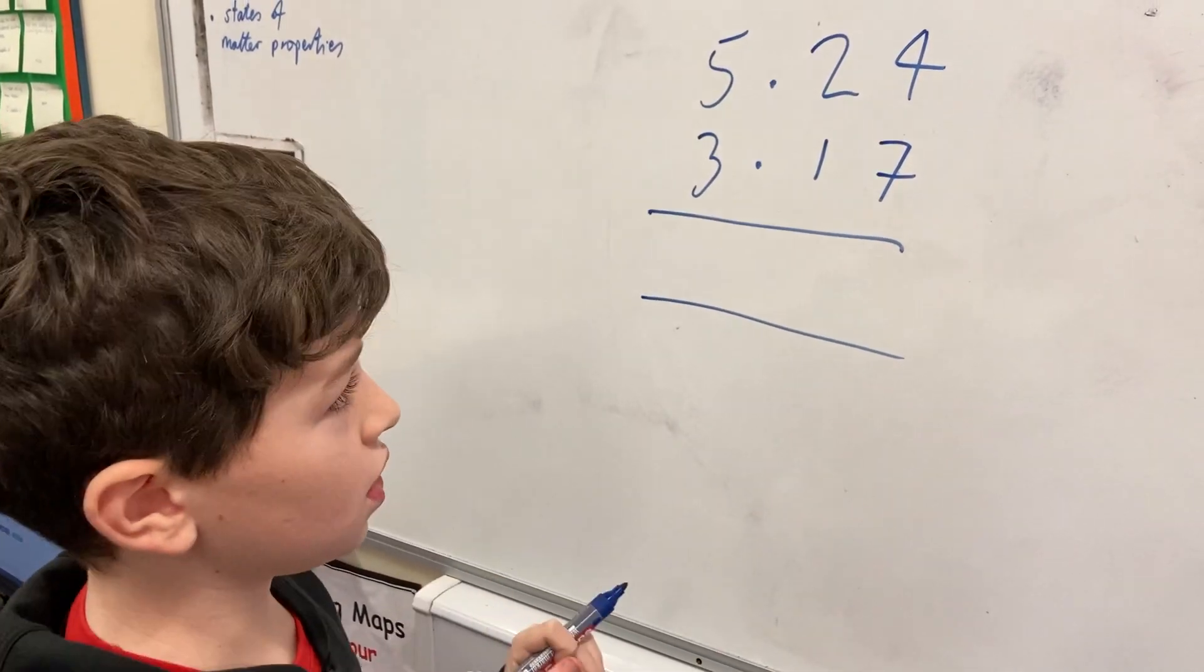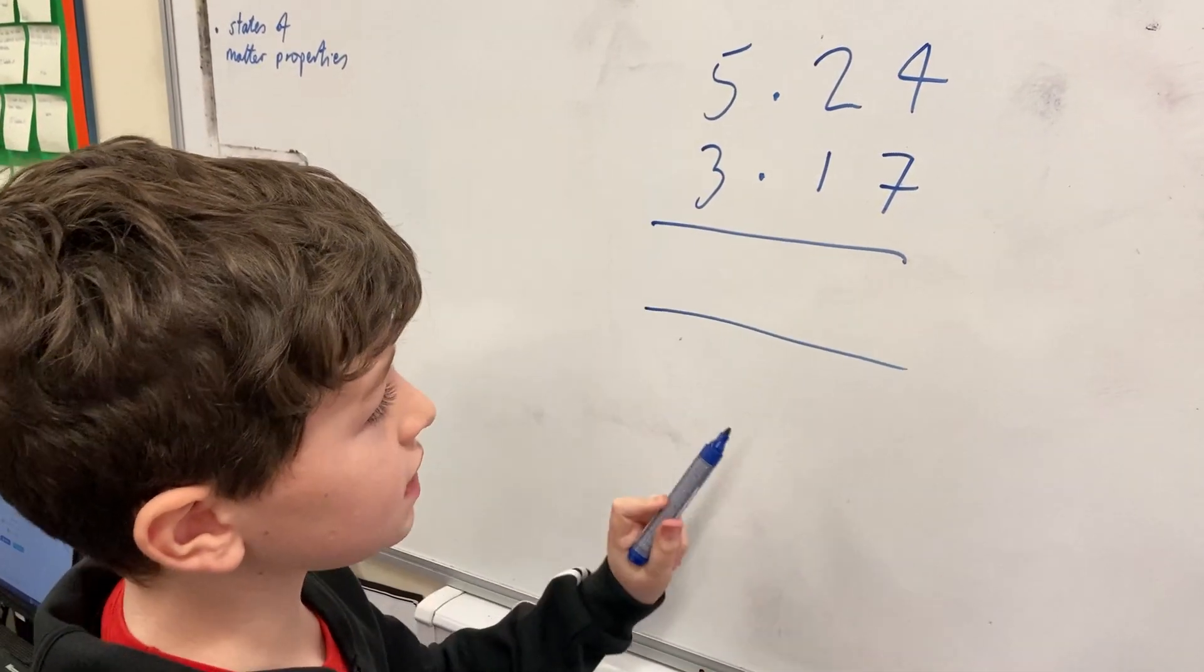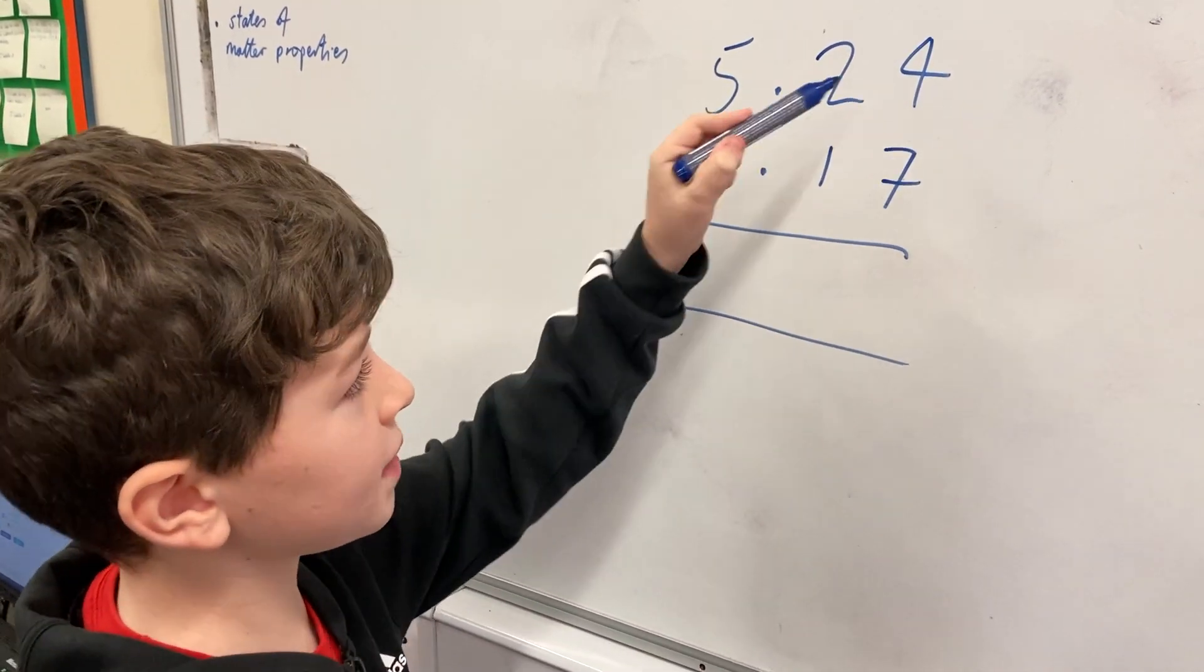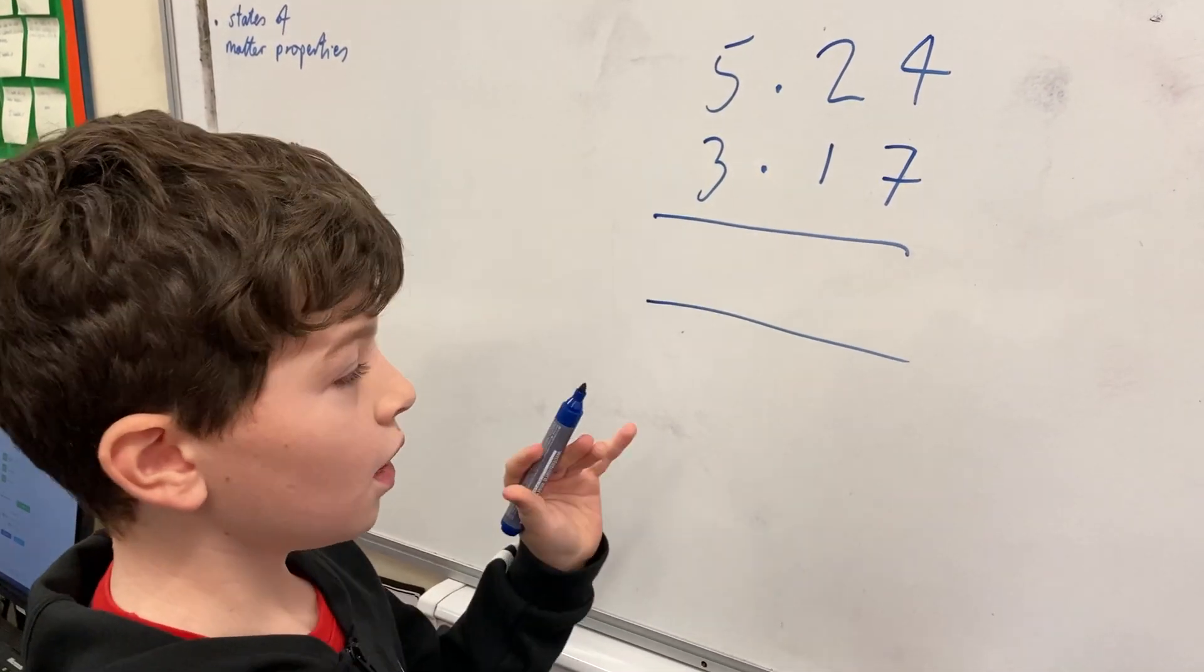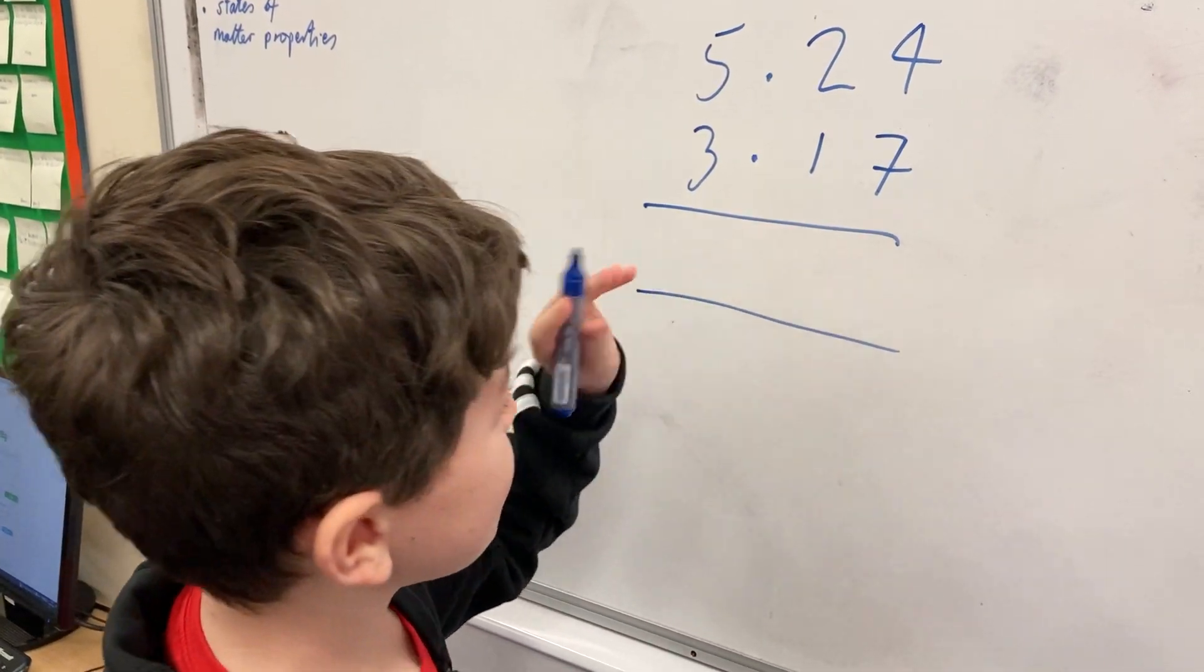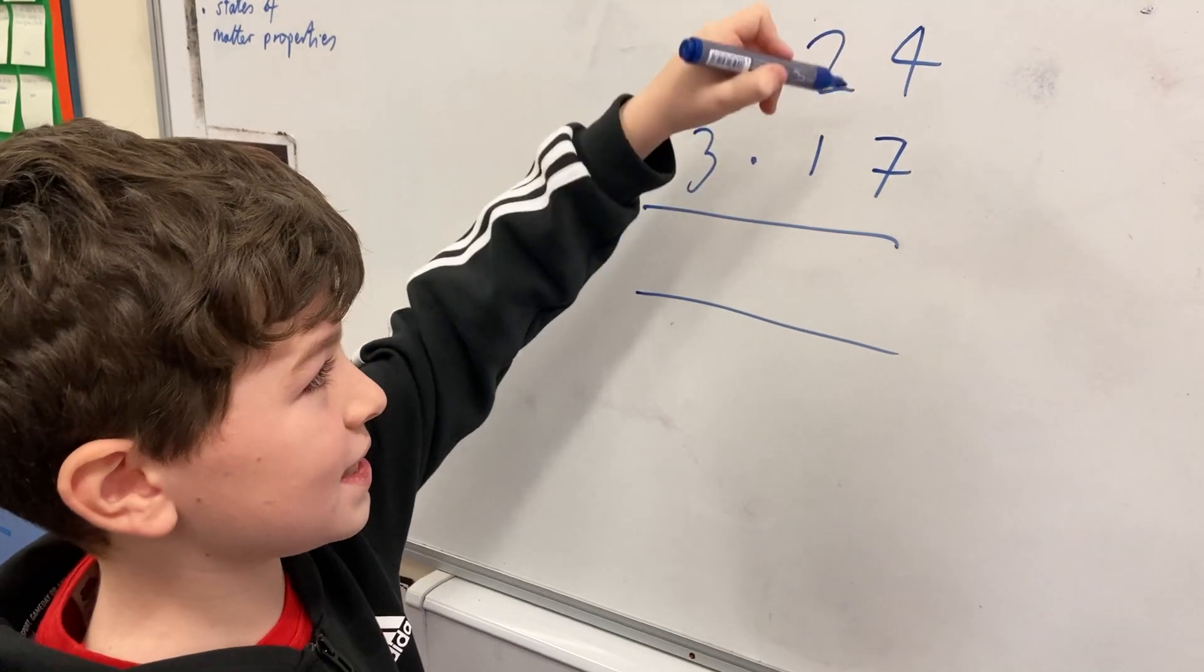This is four hundredths and seven hundredths, but we're going to think of it as four plus seven. What's four plus seven? It's eleven.